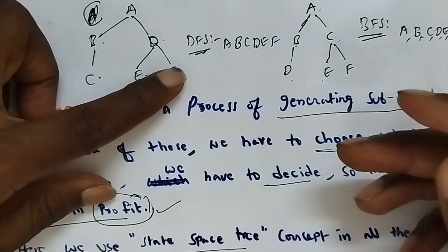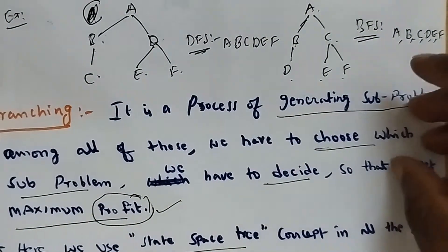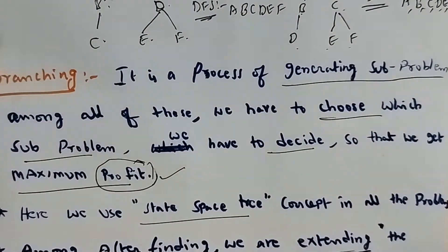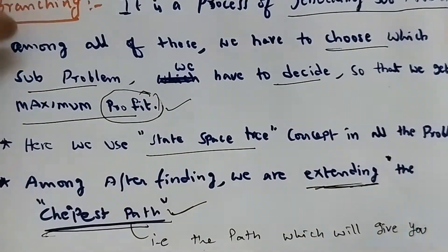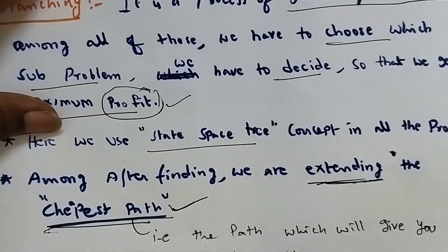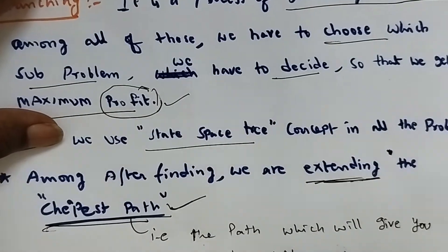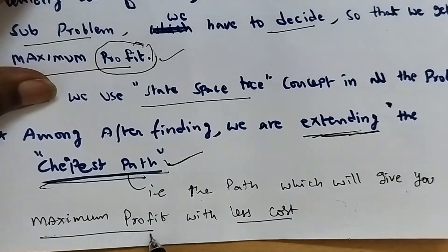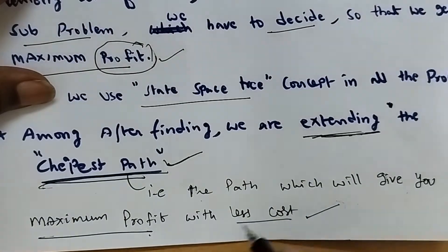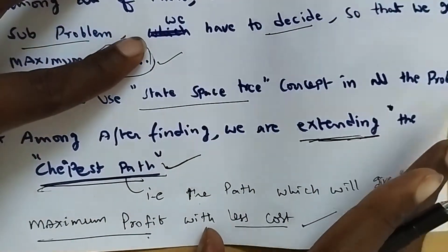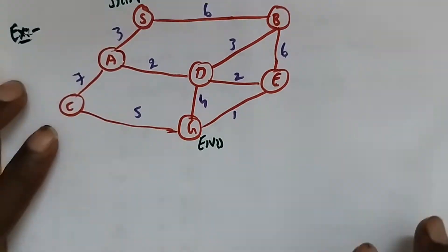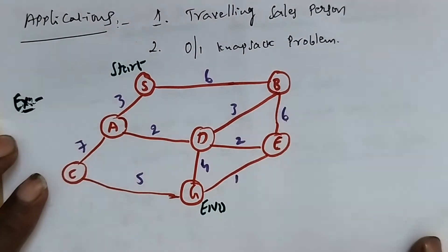Where the least value is available, that path will be extended — the path which gives minimum cost. The applications of branch and bound are the travelling salesperson problem and 0/1 knapsack problem.